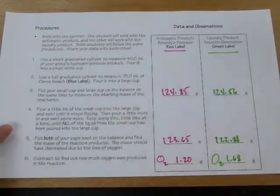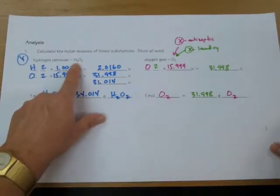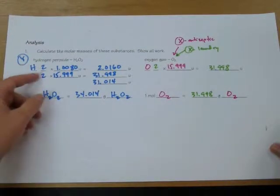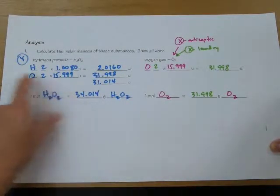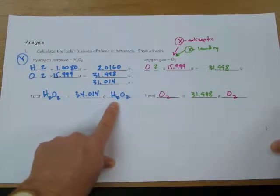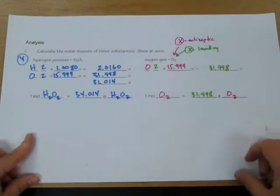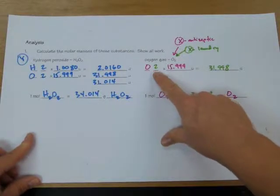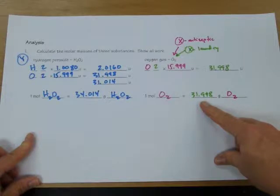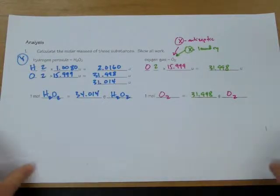We'll need to do the stoichiometry calculations to find out exactly how much more peroxide there is. Before doing those, I need the molar masses of the substances. For hydrogen peroxide, listing the elements, counting atoms, and using the periodic table gives a molar mass of 34.014 grams per mole. For oxygen gas, two atoms of oxygen gives a molar mass of 31.998 grams per mole. We'll use these numbers in our stoichiometry steps.